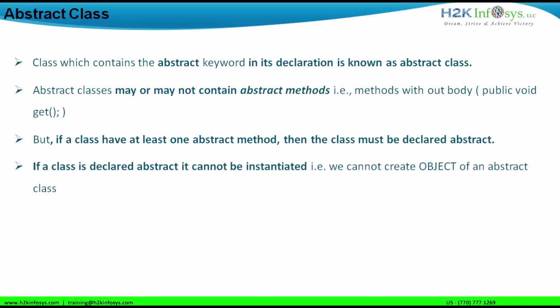The next point is that if a class is declared abstract, it cannot be instantiated — meaning you cannot create an object of an abstract class. Because we cannot create an object of the abstract class, we cannot use the non-static variables and non-static methods present in it, and we cannot use the main method either, since in the main method we have to create objects and initialize them to get results in the console.